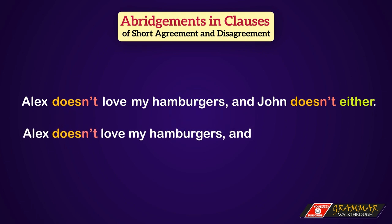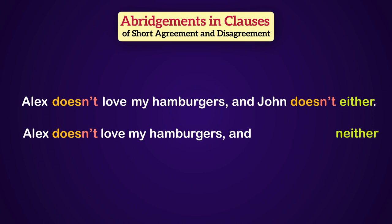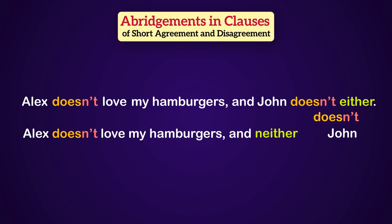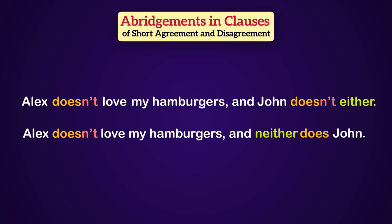And in the second form, we have to change 'either' into 'neither,' move it to the beginning of the second clause, reverse the subject and auxiliary, and remove the negative form: Alex doesn't love my hamburgers, and neither does John. These two sentences have the same meaning for showing agreement between two clauses.